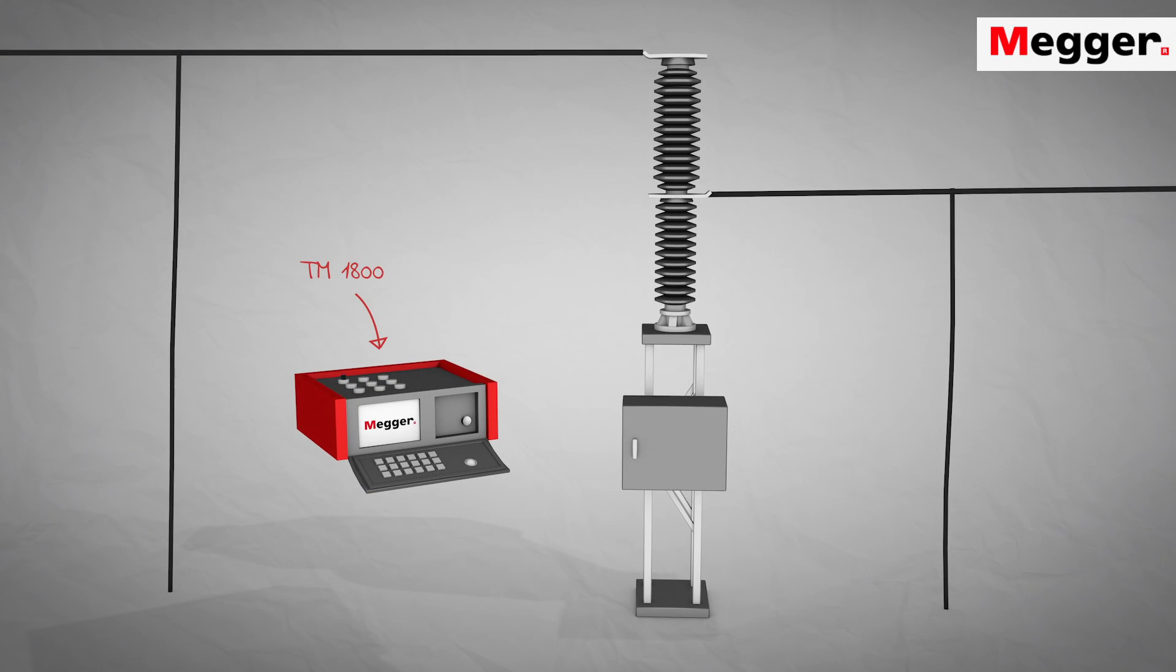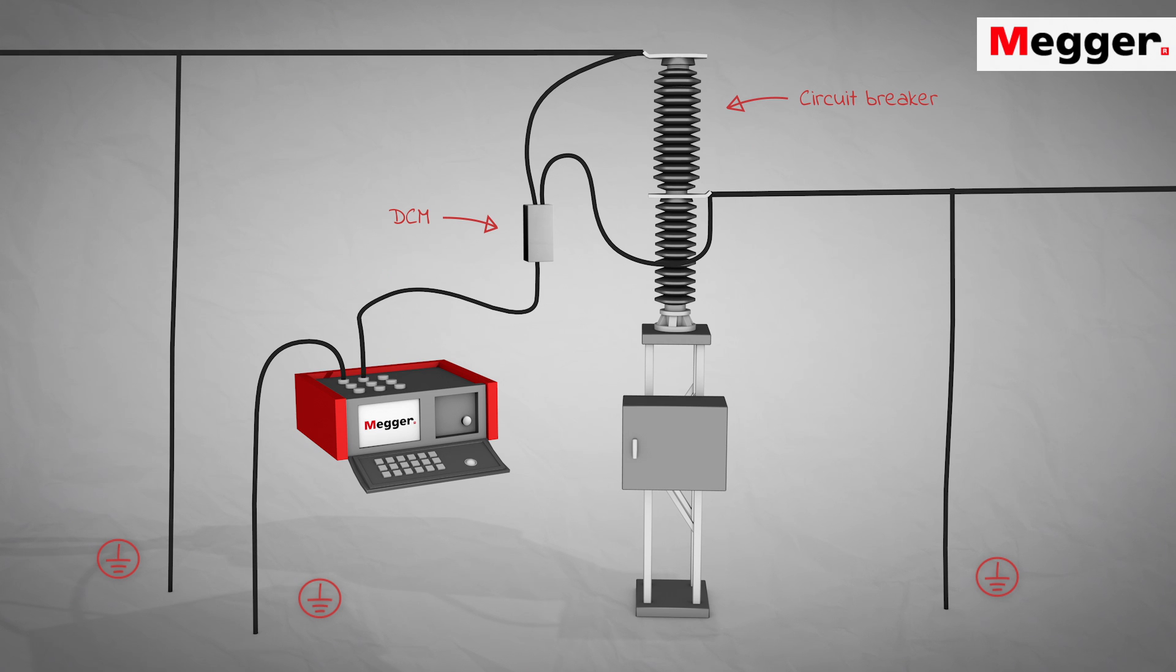Start by connecting the TM1800 to ground. Connect the DCM cables to the circuit breaker. Connect the control cables to the circuit breaker's trip and close coil circuits.